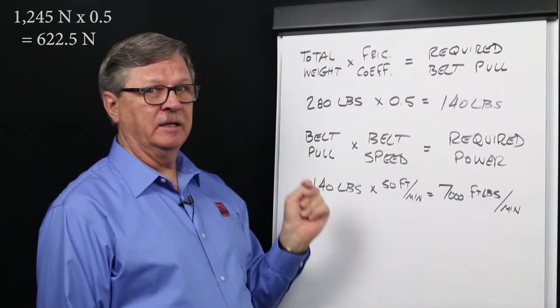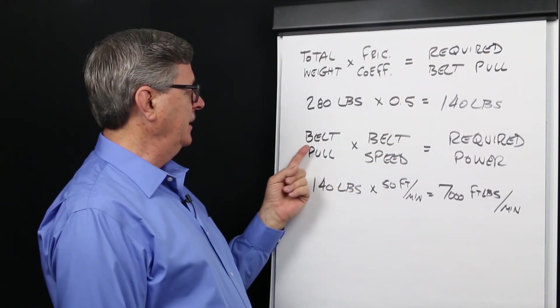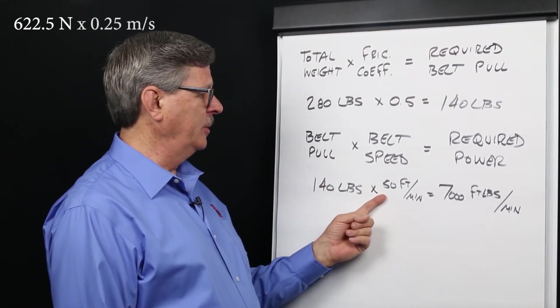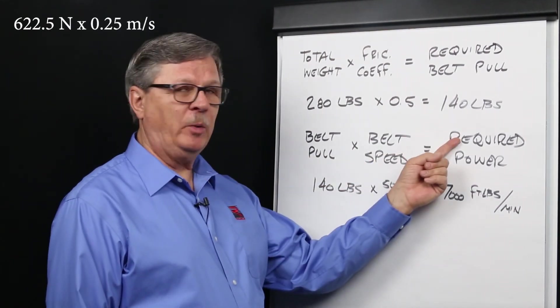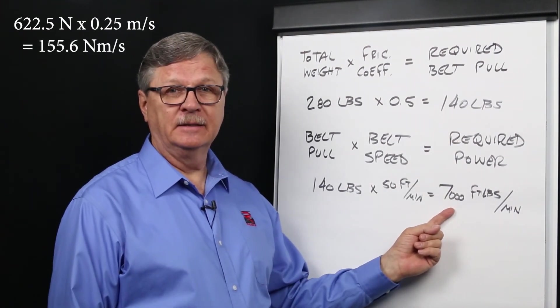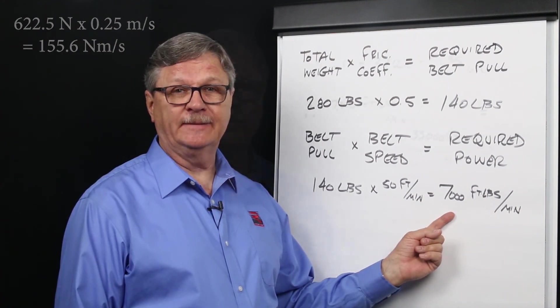Now we can convert this to power. A belt pull of 140 pounds times a belt speed of 50 feet per minute equates to a required power of 7,000 foot-pounds per minute. We can now convert that to a useful unit.